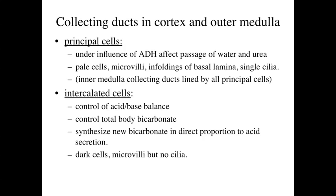In between the principal cells in the cortex and the outer medulla are some intercalated cells. These intercalated cells are basically there to control the acid-base balance within the body. They do this by synthesizing bicarbonate in proportion to the acid being secreted — so if hydrogen ions are being secreted, these cells produce more bicarbonate to balance them out. These are dark cells in electron microscopy, with microvilli along the surface but no cilia.